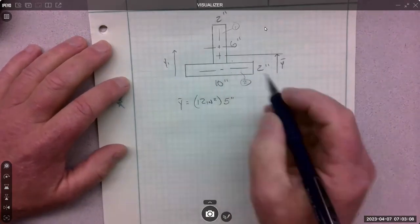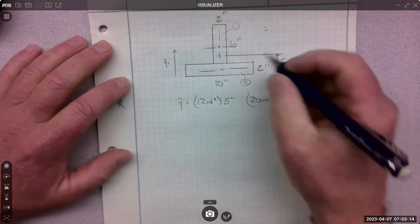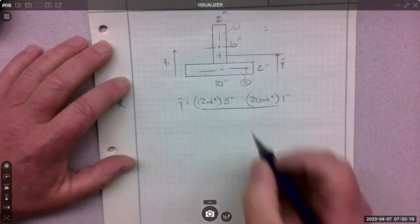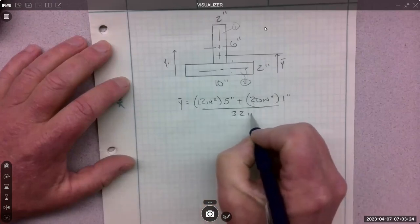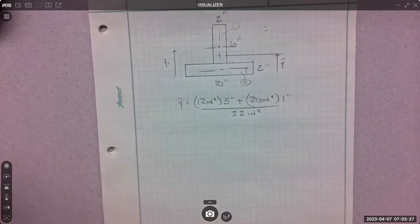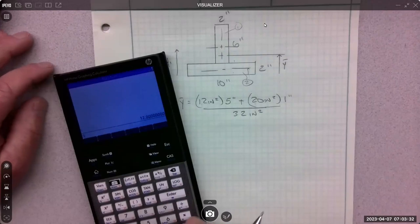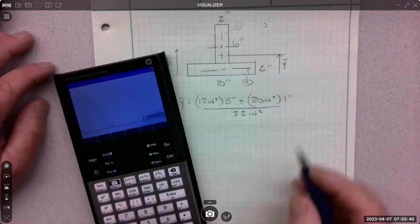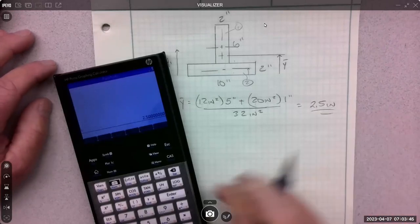And then shape two looks like it's 20 inches squared, and then one inch up to its centroid. And all of that would be over the total area of 12 plus 20, 32 inches squared. So let's run this real quick. Try not to make a mistake. That gives us two and a half for y-bar.